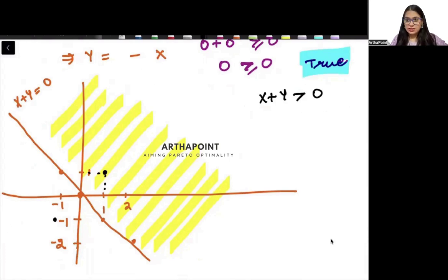We cannot take negative values. We need it to be positive. Sum to be positive. So it has to be in this zone. Do you understand?